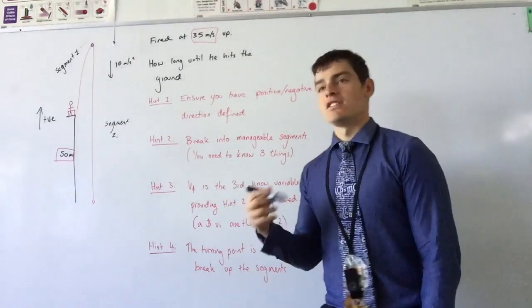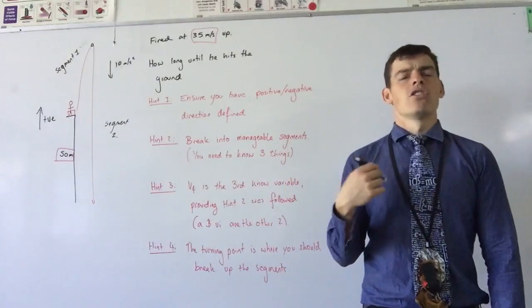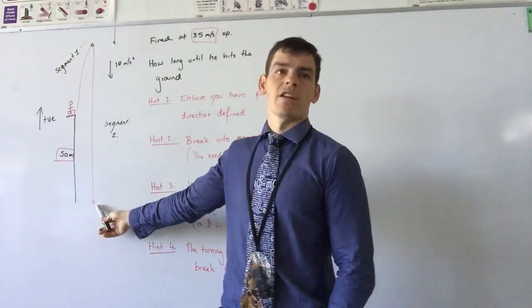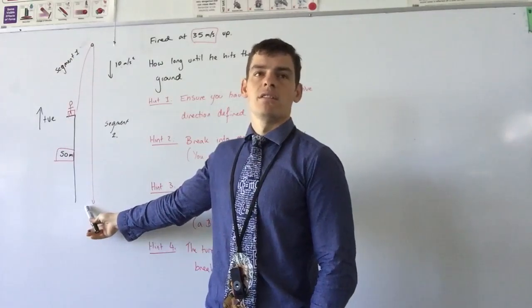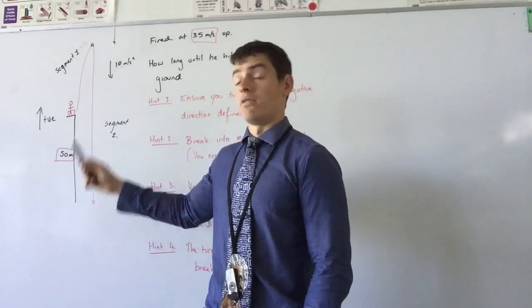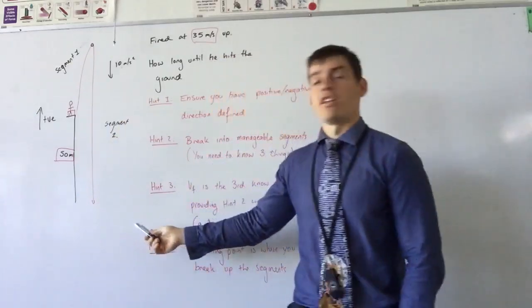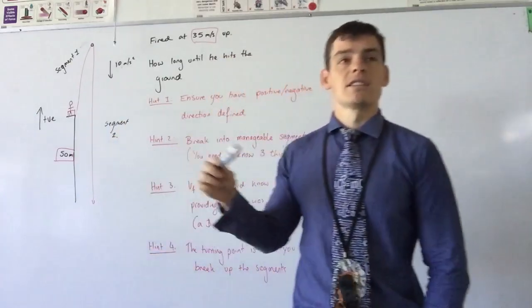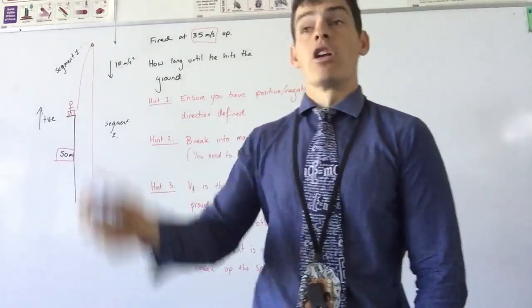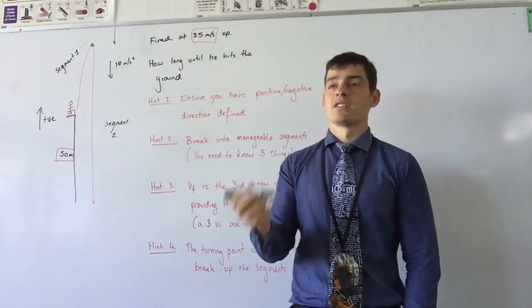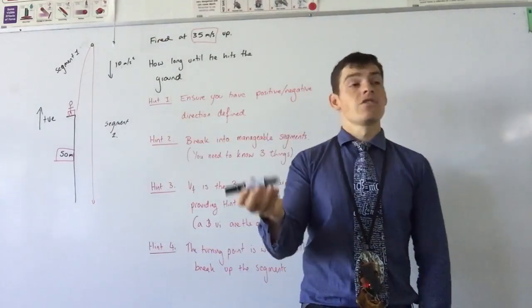My third hint was that VF is the third known variable. And everyone's saying, but I don't know what velocity he hits the ground at. No. He hits the ground at a velocity. I genuinely don't know what that velocity is, but I know a velocity at some point in that path. I know his vertical velocity at some point in that path.